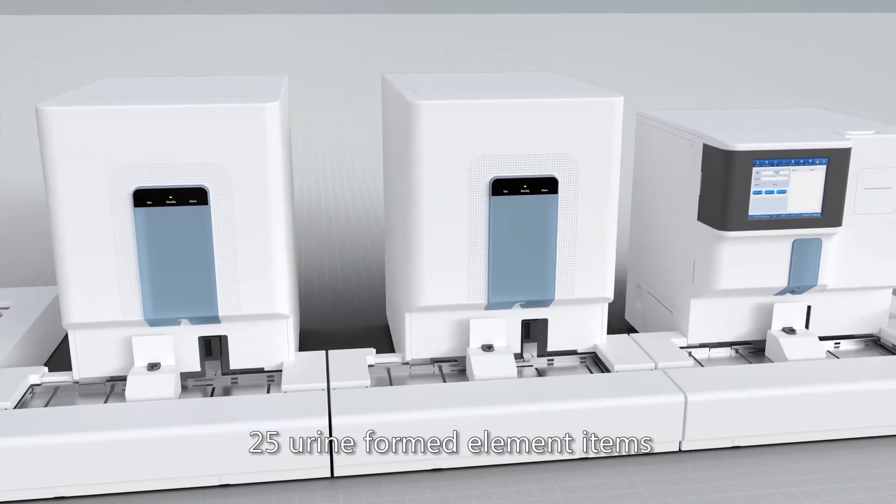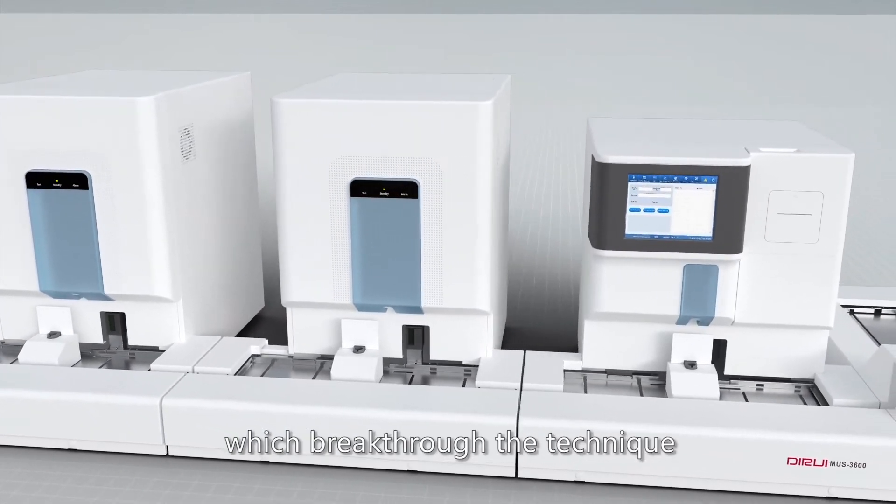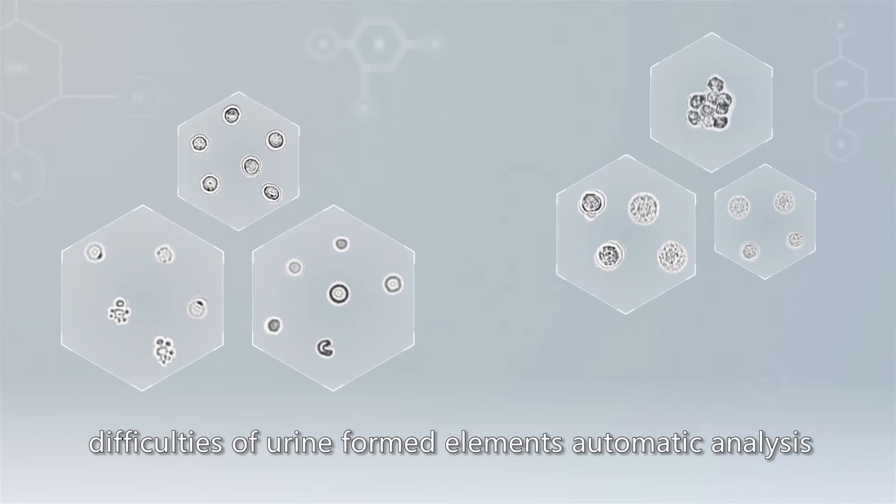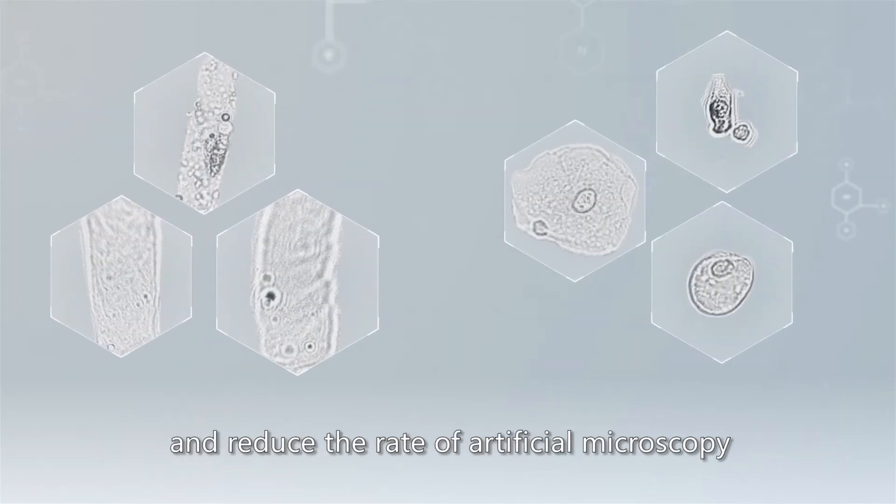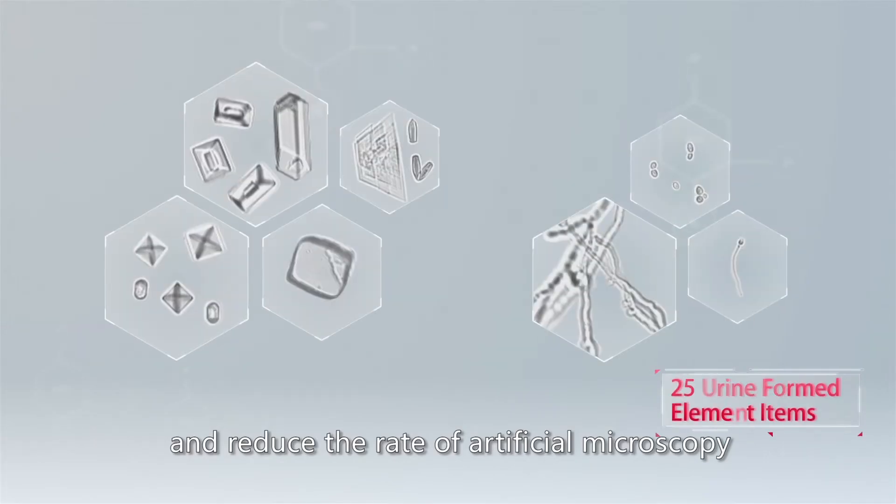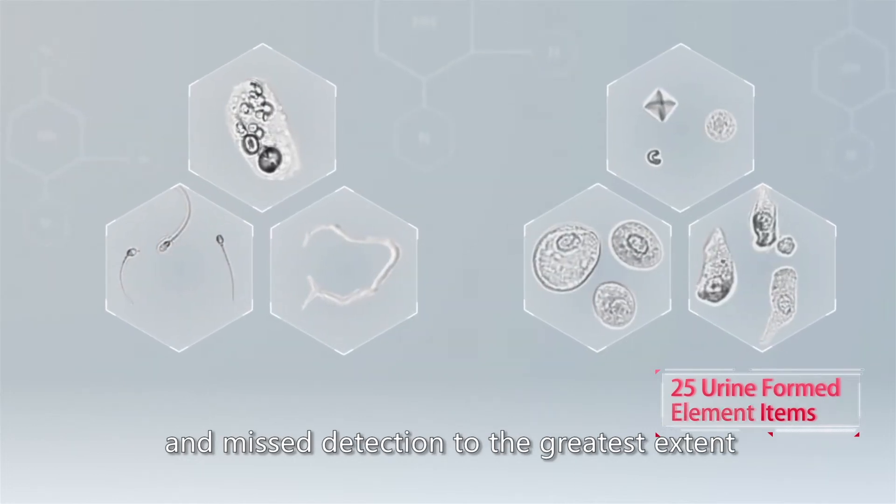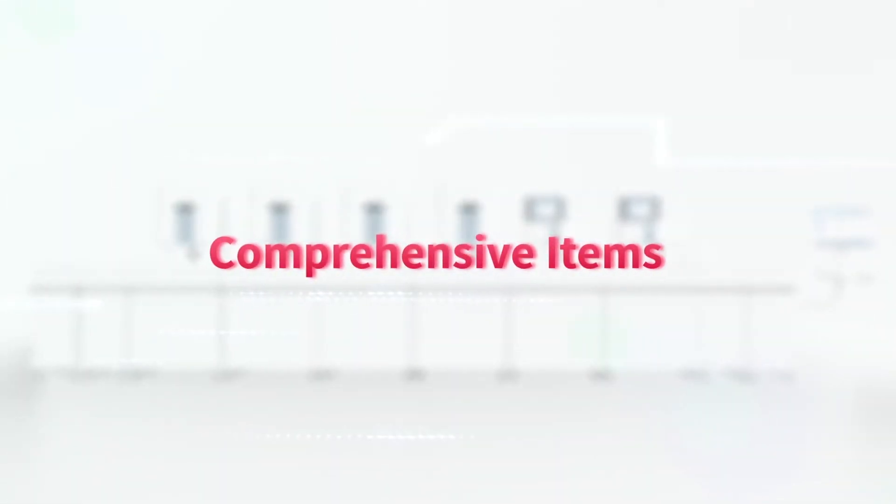25 urine-formed element items break through the technical difficulties of urine-formed elements' automatic analysis and reduce the rate of artificial microscopy and misdetection to the greatest extent.